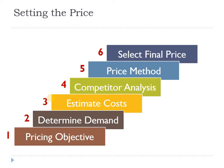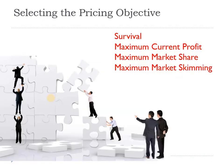Today we will quickly talk about the six steps which are considered while selecting the price of a product. Those who are in BBA would have essentially done it, and those who are not, it will not be very difficult to understand. As you can see, first we talk about pricing objective, then demand, estimation of cost, competition analysis, pricing method, and then we select the final price.